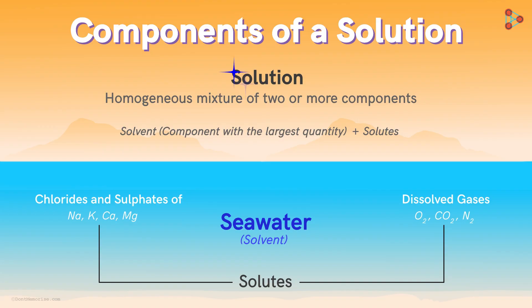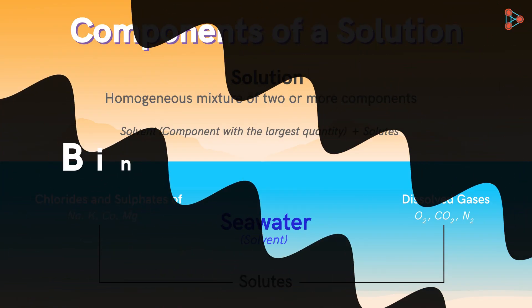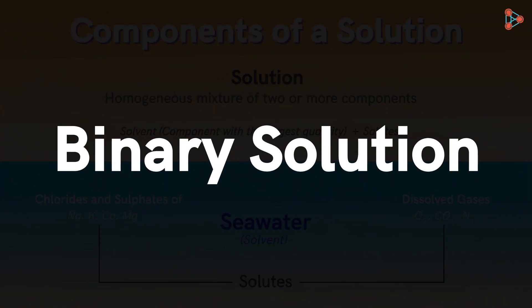Remember, a solution will always have only one solvent but can have more than one solute dissolved in it. But in this one and the upcoming videos, we will only focus on binary solutions with a liquid solvent.